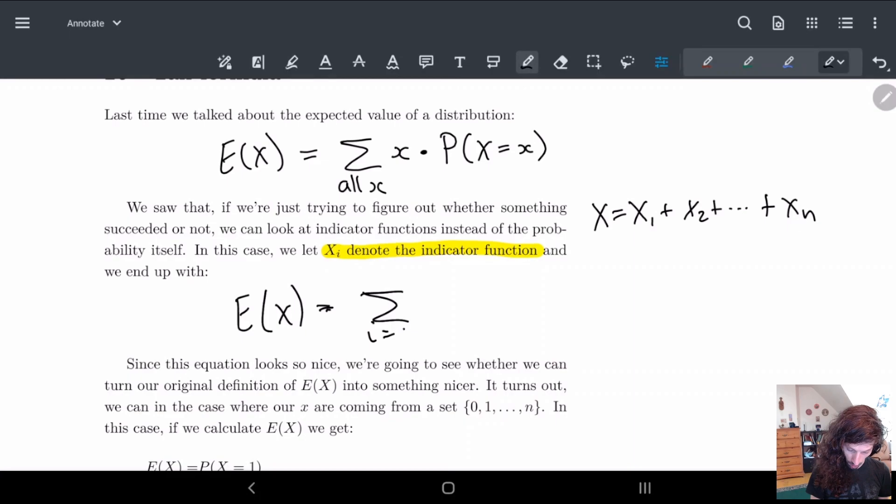We're gonna sum up over all of the X_i's. The little x becomes one so we don't have to include that, and we just sum over all the X's.